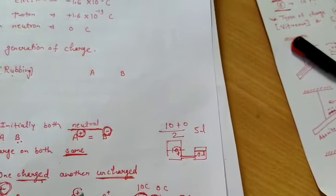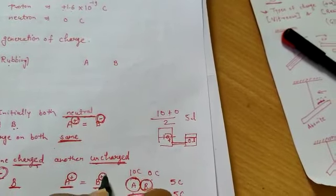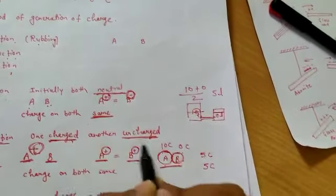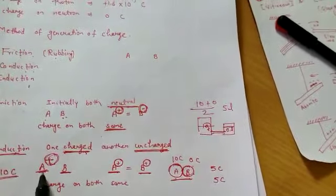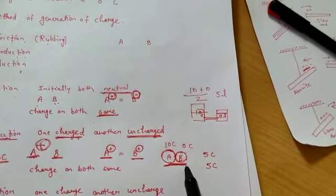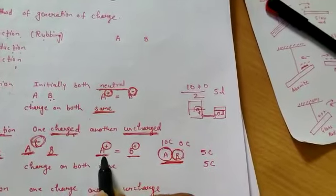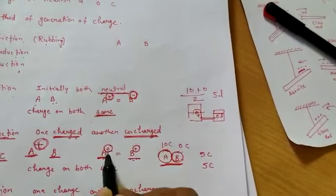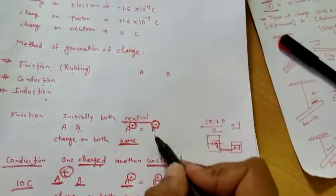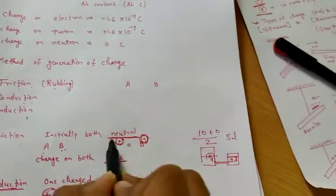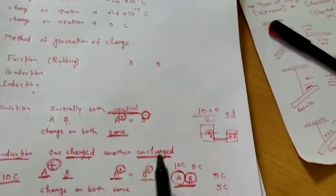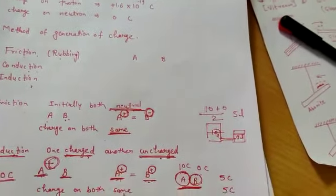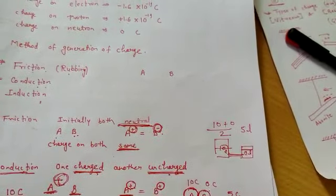So in conduction, the amount of charge on A equals the amount on B after charging, and the polarity is also the same — if A is positive, B will also be positive. Comparing friction and conduction: in friction both start neutral; in conduction one is charged and one is uncharged. In both cases the magnitude is the same, but in friction polarity is opposite while in conduction polarity is the same.